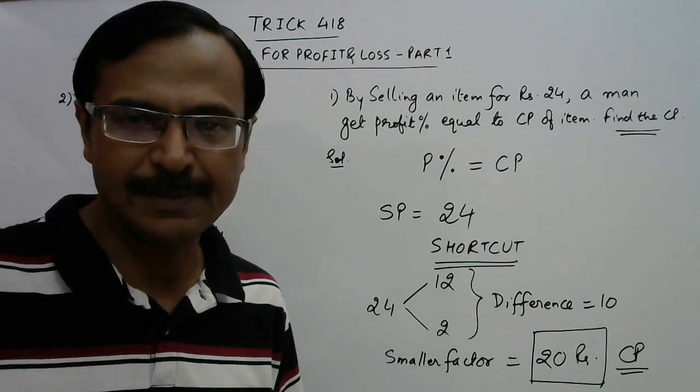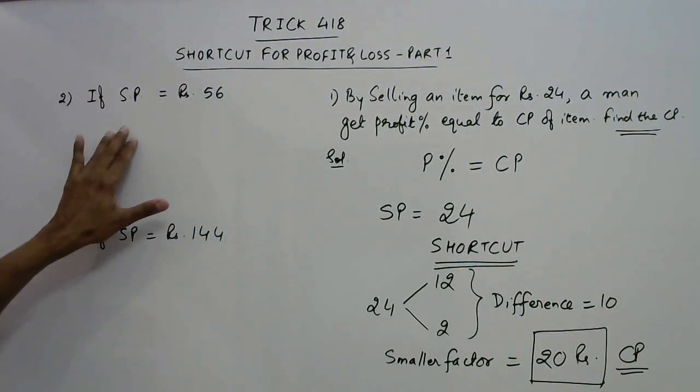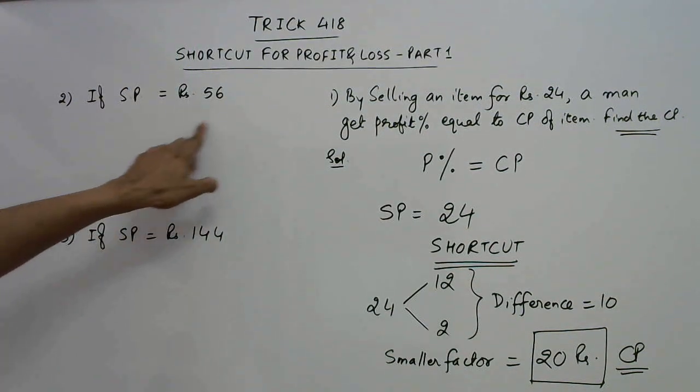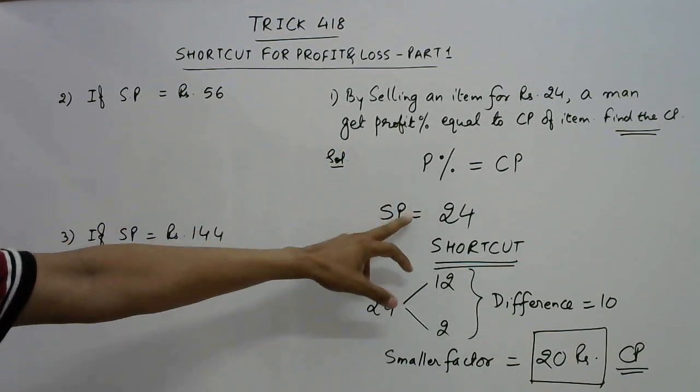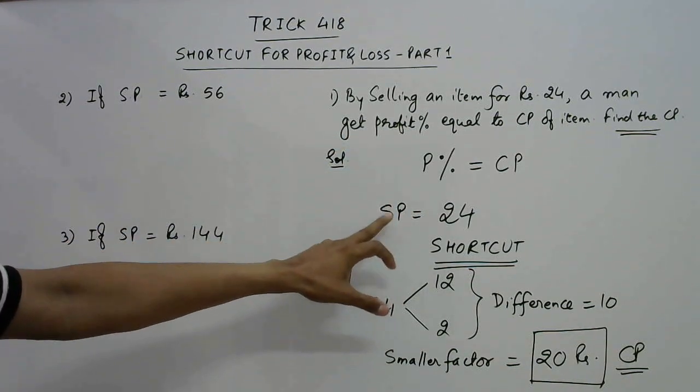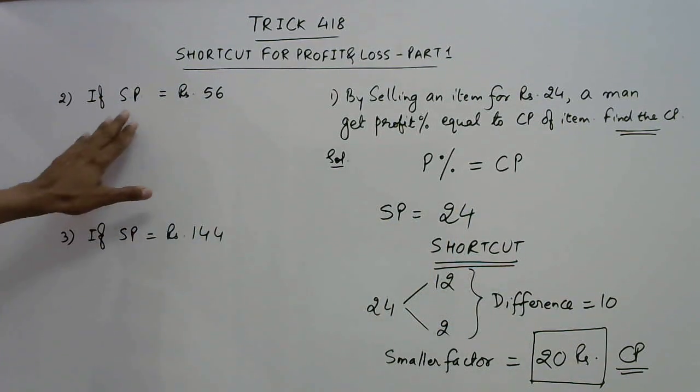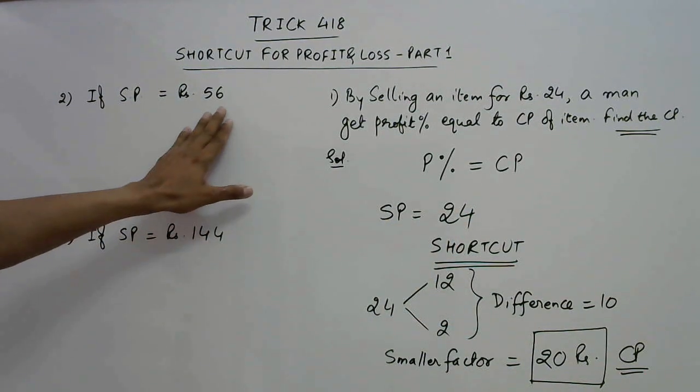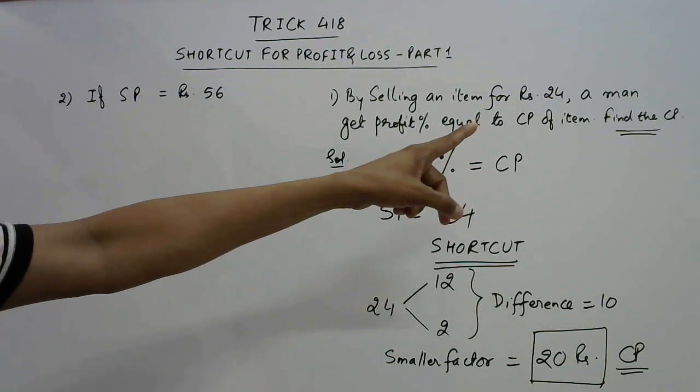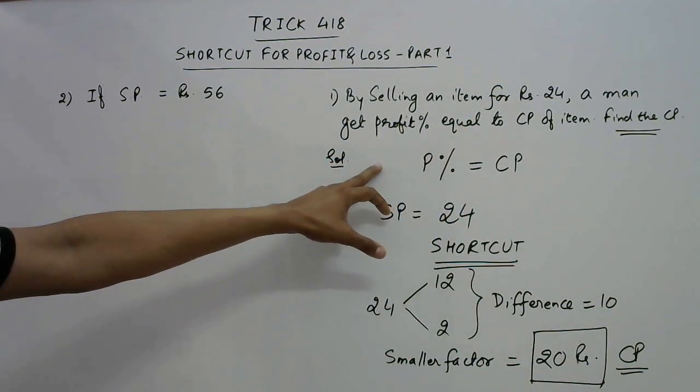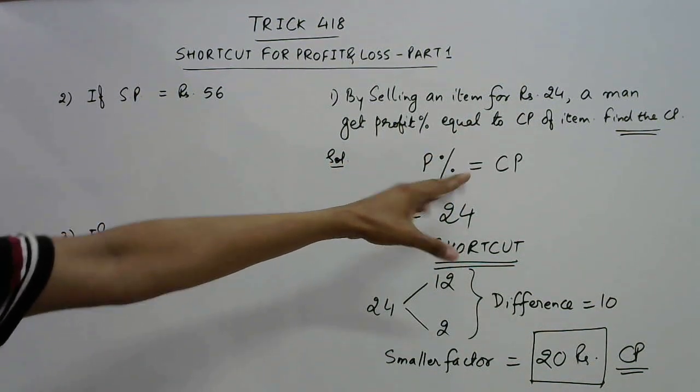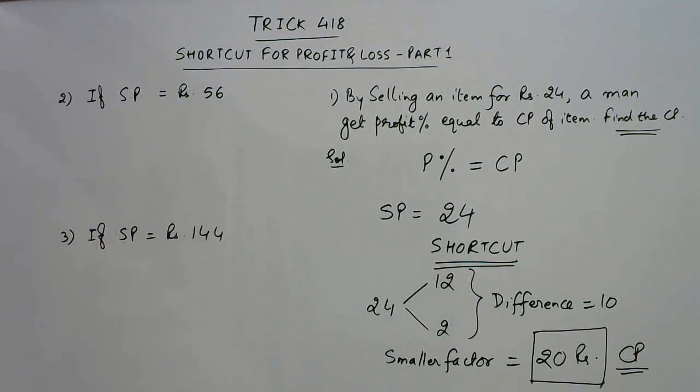Let's have one or two more questions to practice this method. In this question here I have changed the selling price. Earlier we had the selling price as 24 rupees, now I have changed the selling price. The other statement remains the same, so profit percent is given equal to the cost price of the item and we need to find the cost price.